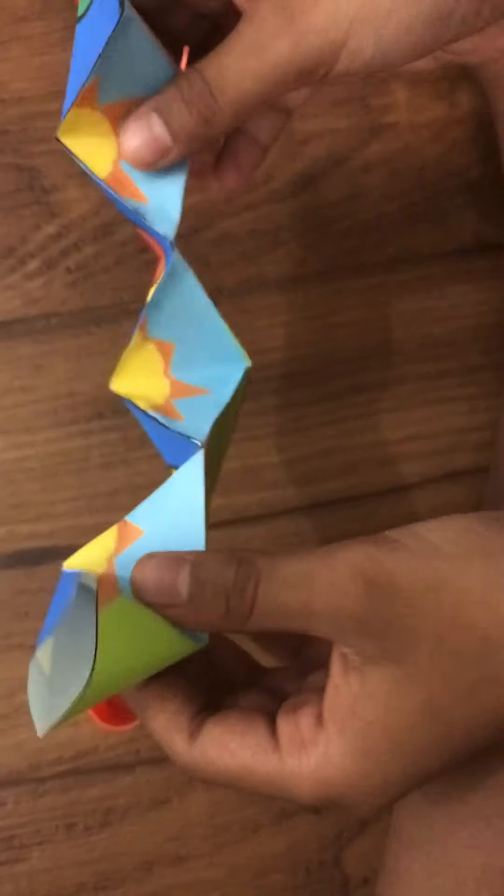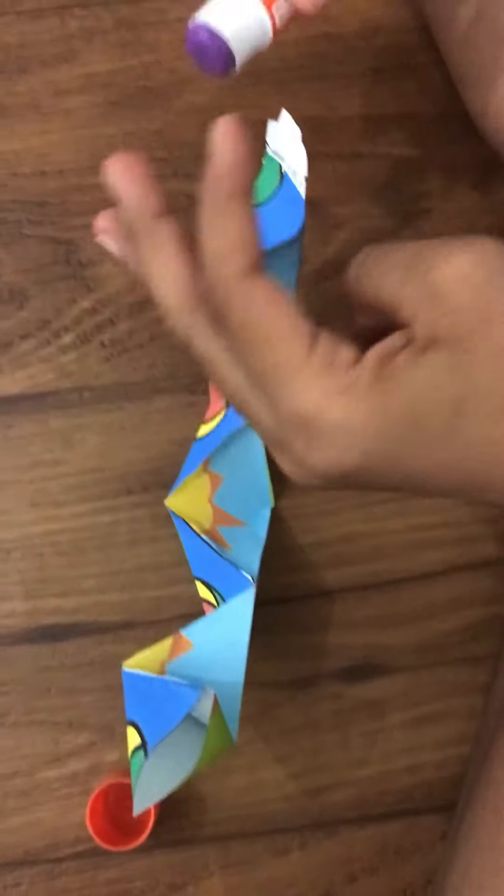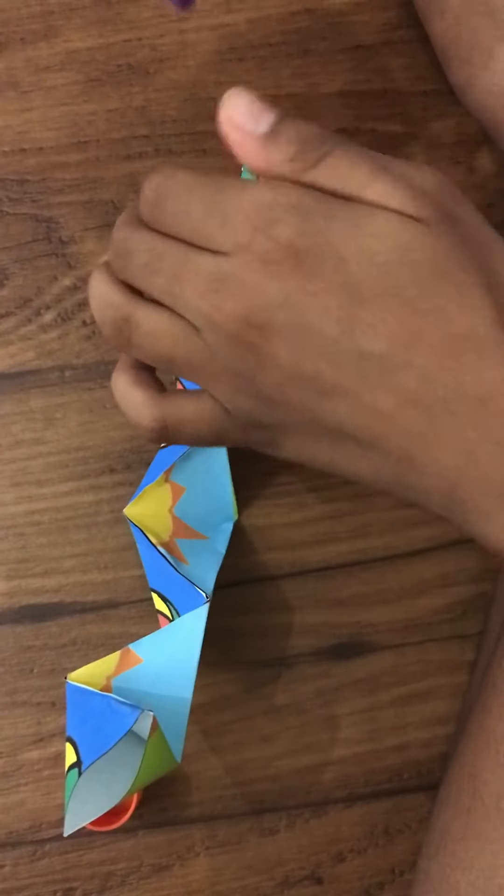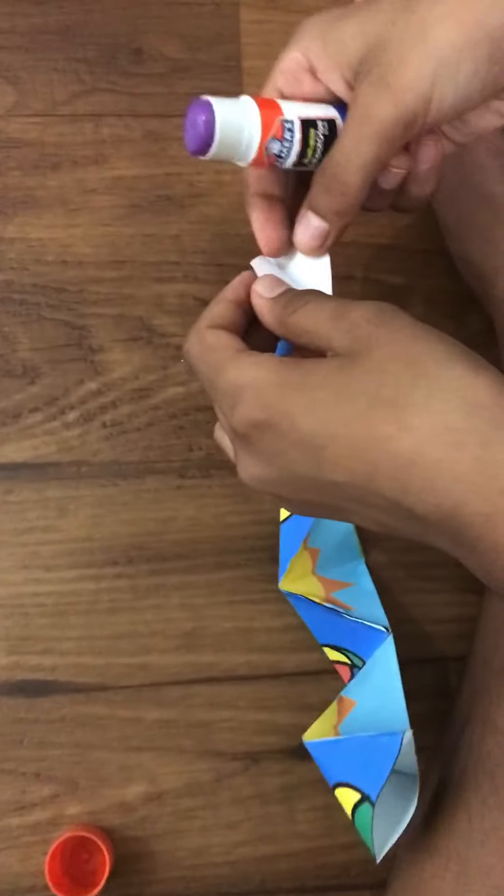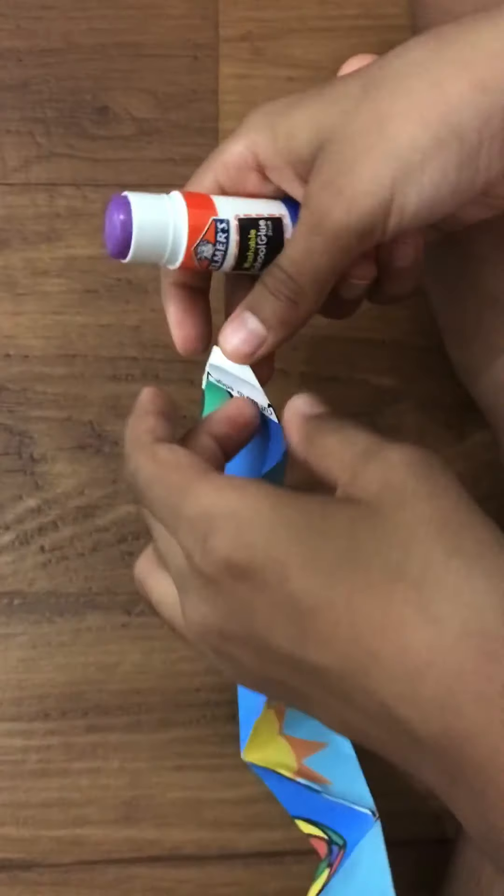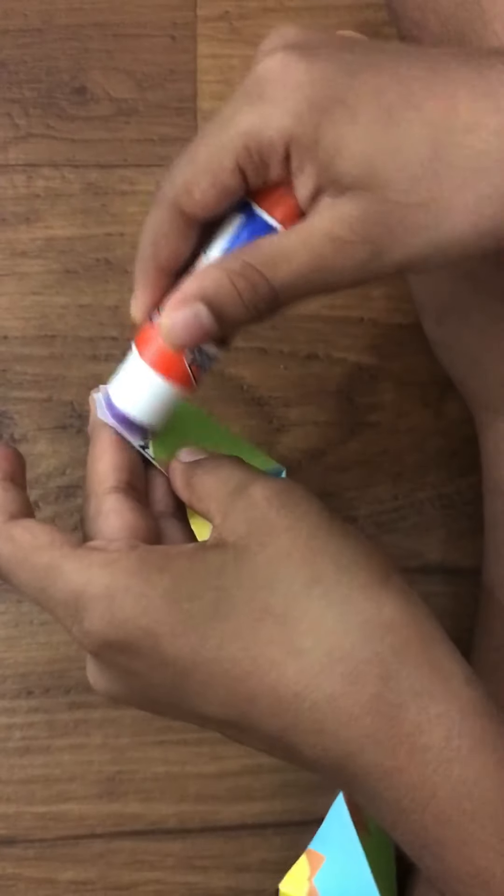Once you glue them together, now we're going to connect it to make a ring. I'm just going to take your glue. Don't unglue in between these. Glue on these white tabs.